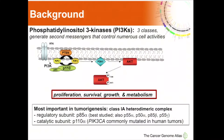Most people are familiar with the phosphatidylinositol-3 kinases, a very large family of heterodimers between regulatory subunits. P85-alpha is most commonly known, but there are four others. And the catalytic unit, the P110-alpha, which is encoded by the PIK3CA gene, which is very commonly mutated in human cancers.